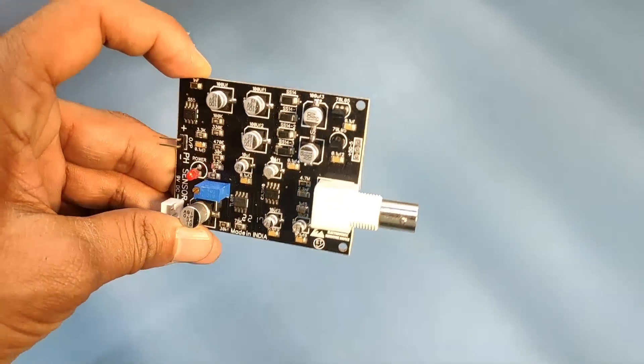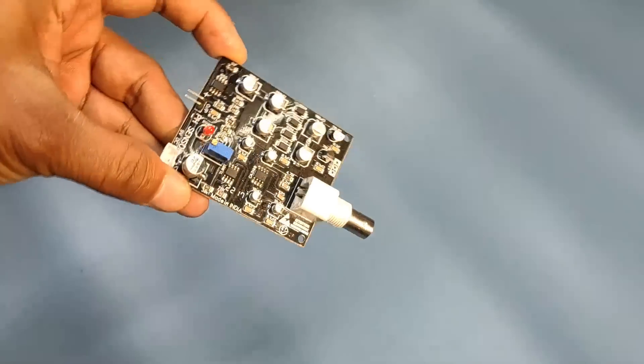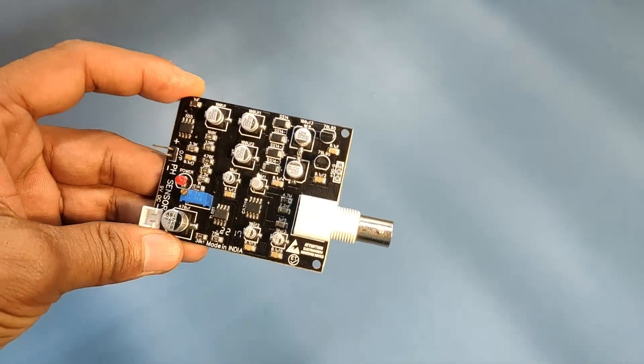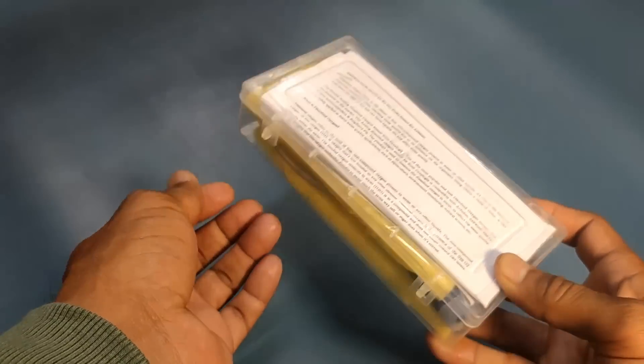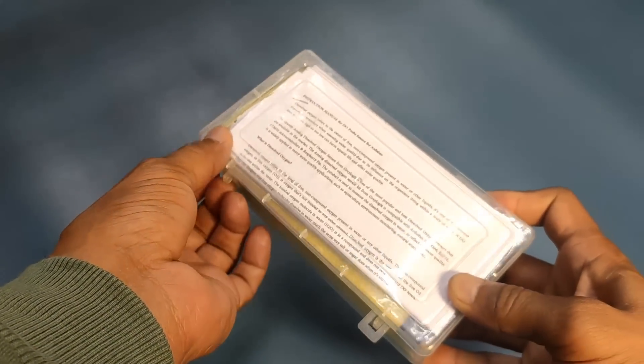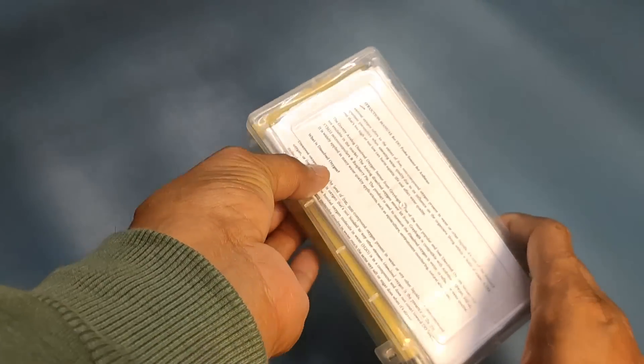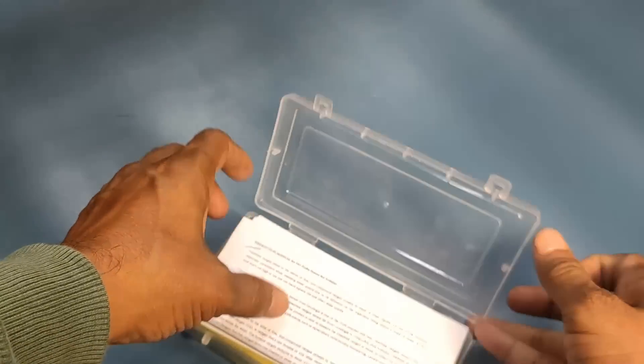The D.O. sensor kit has a signal converter board with a BNC connector, which can directly be connected to the galvanic probe. The signal converter board basically amplifies the minor voltage difference to a readable signal that can be detected by Arduino. The signal converter board is plug and play and has good compatibility.